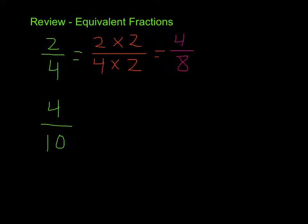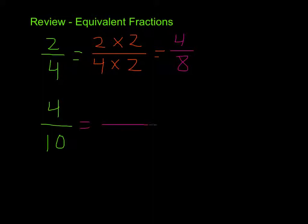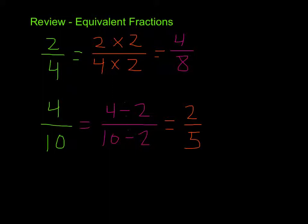4 eighths is an equivalent fraction to our 2 fourths. The other way I can do it is divide. I'm going to take 4 tenths and create an equivalent fraction by dividing by 2. That gives us 4 divided by 2 is 2, and 10 divided by 2 is 5 — so 2 fifths. 2 fifths is an equivalent fraction to 4 tenths, and 4 eighths is an equivalent fraction to 2 fourths.